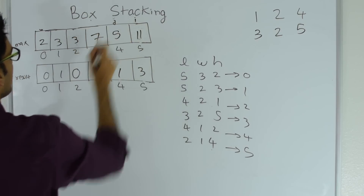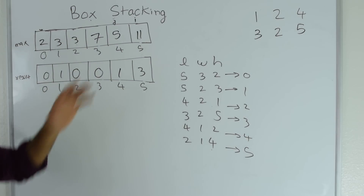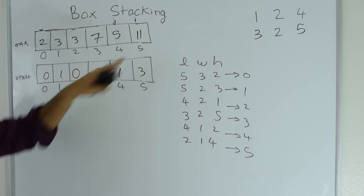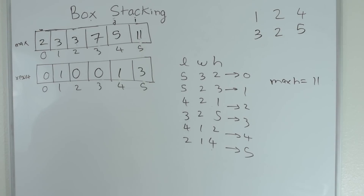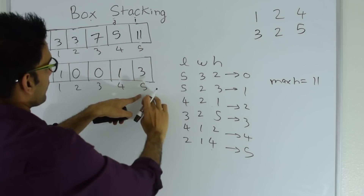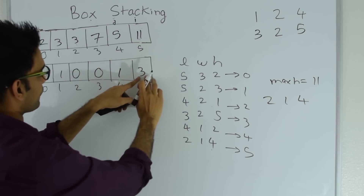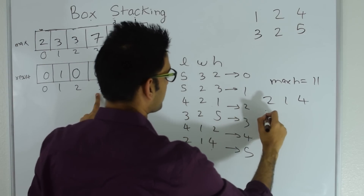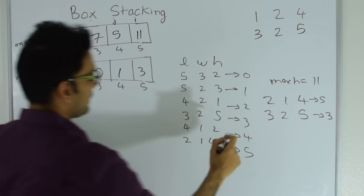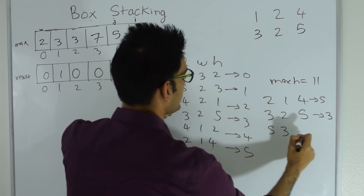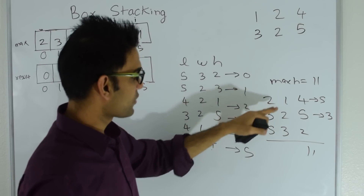After the iteration is complete, we go through the max array and find the maximum, which is 11. To get the actual arrangement, we look at index 5 — box 2,1,4 is at the top. From box 5 we go to box 3, which is 3,2,5. From box 3 we go to box 0, which is 5,3,2. So the maximum height is 5 plus 2 plus 4 equals 11, with the arrangement 5,3 at the bottom, then 3,2, then 2,1 on top — each box strictly smaller than the one below.